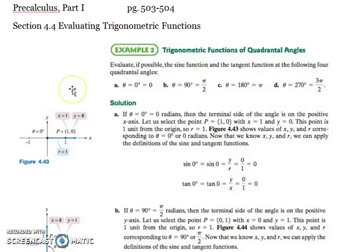The quadrantal angles are the quarter of the way. Quad means 4. So the four main angles are 0, 90 or π over 2, 180 or π, and 270 and 3π over 2. So those are the four main angles.